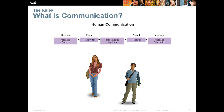Another way to look at that is we have to have a way to encode the message, send or deliver the message, and decode the message. There's going to be a message source and a message destination. For example, if you're talking to yourself, you could be both the source and the destination. As opposed to talking to someone else, where the person speaking is the source and the other person is the destination.